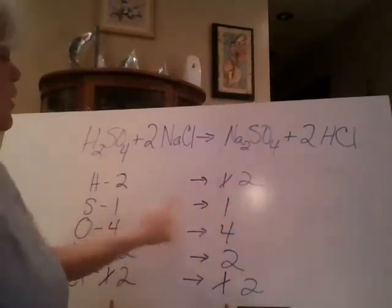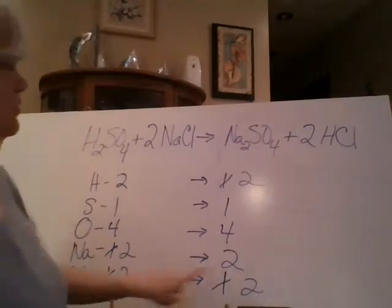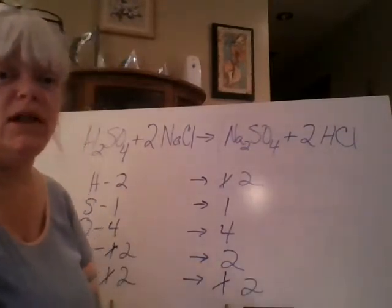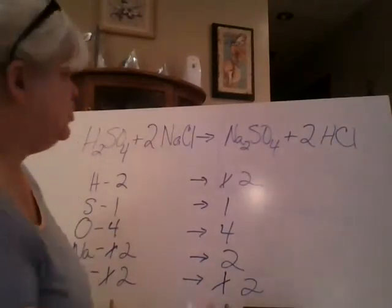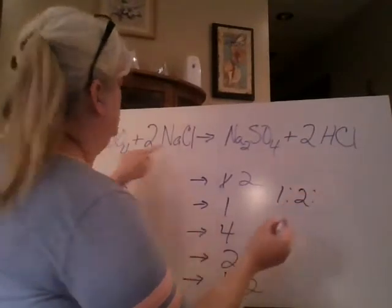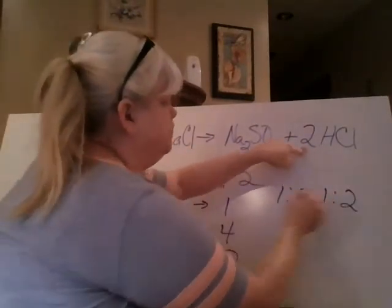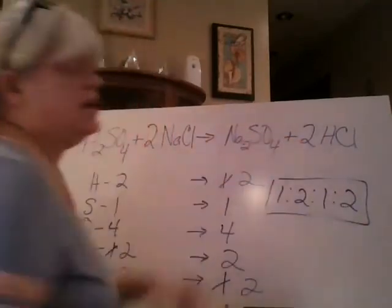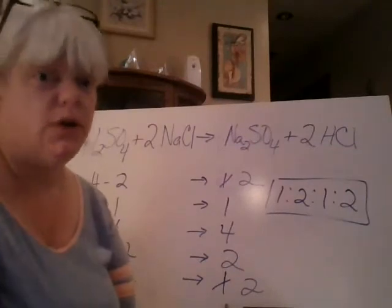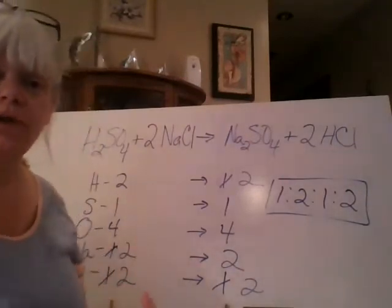I've got two and two, one and one, four and four, two and two, and two and two. All right. So that one is balanced. Let's see if it's in lowest ratio. I have one to two, to one, to two. And yes, can't divide all of them by the same number to go any lower. So we're good to go. All right. So those were the two answers and how you should have worked them out.